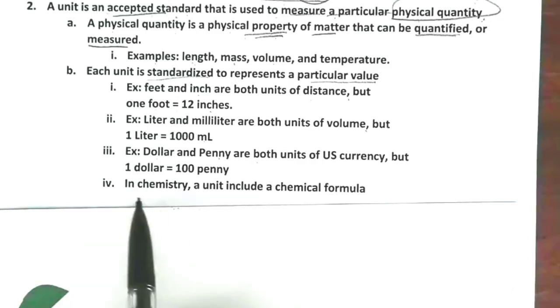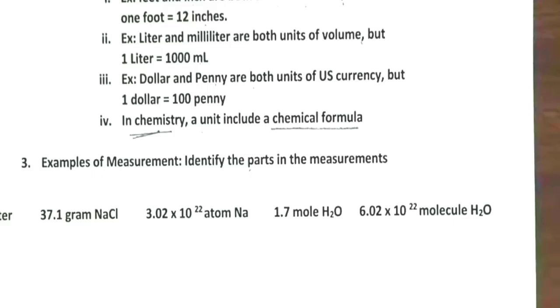And in chemistry, a unit will include a chemical formula to label the substance that is being measured because different substances have different physical properties. Here I have different measurements. Let's identify the part in the measurement.